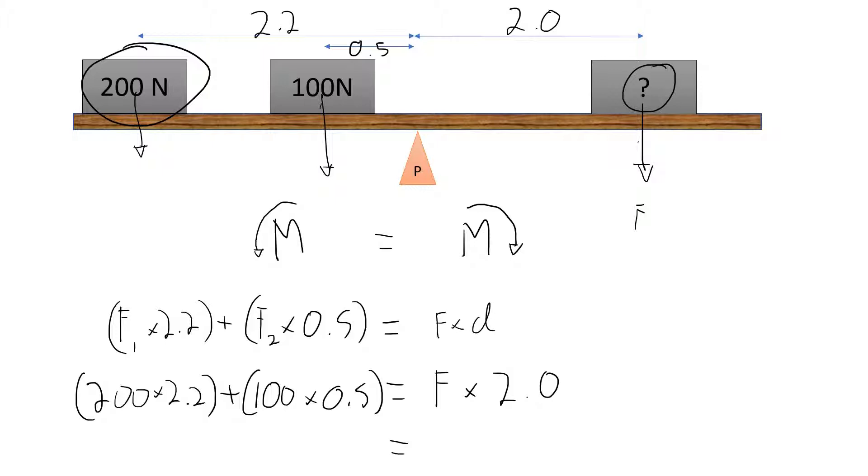So here we have, this will be 50 newton meters plus 200 times 2.2 will be 440 newton meters. And that will be equal to F times 2, 2 meters.